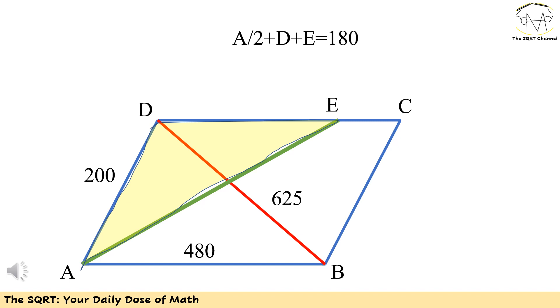for A. So we have A over 2 plus D plus E equals 180 degrees. Now the rest is easy. We have two equations and we are going to have E,